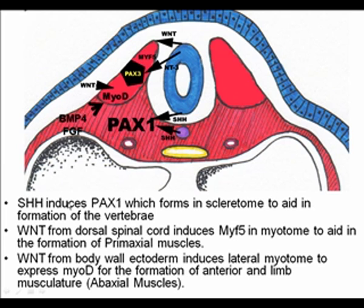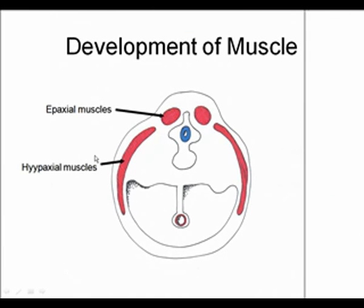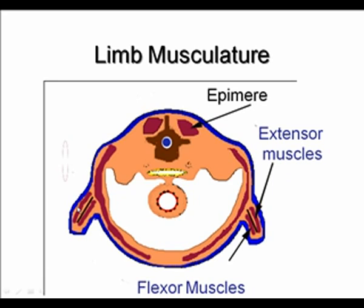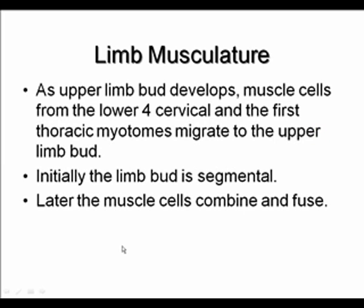Sonic hedgehog is important in influencing PAX1 for sclerotome development. The WNT genes also influence MYOD, which is important for forming those muscle cells. The hypaxial muscles will develop into the limb bud muscles and will form two compartments — a flexor and an extensor compartment. Initially the limb bud is segmental, developing from C5 through T1 in terms of muscles, and then later the muscle cells combine and fuse.